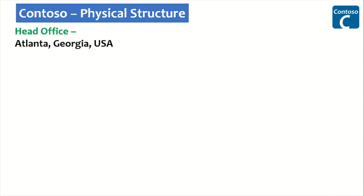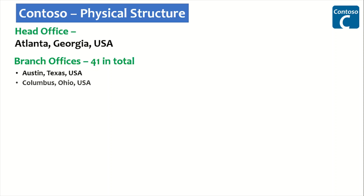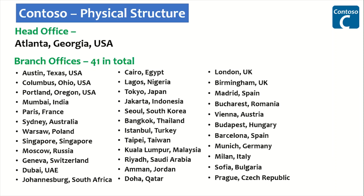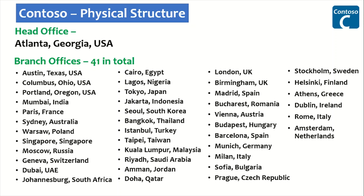Let's look at the physical structure or presence of Contoso across the globe. The headquarters is in Atlanta, Georgia, and they have 41 branch offices across the globe — Western Texas, Columbia, Columbus Ohio, Portland Oregon, Mumbai India, and so on.